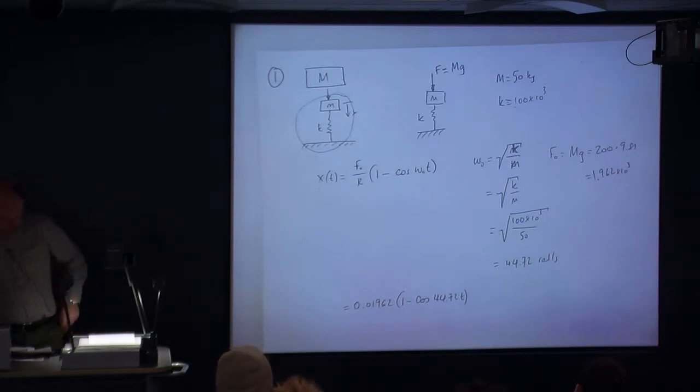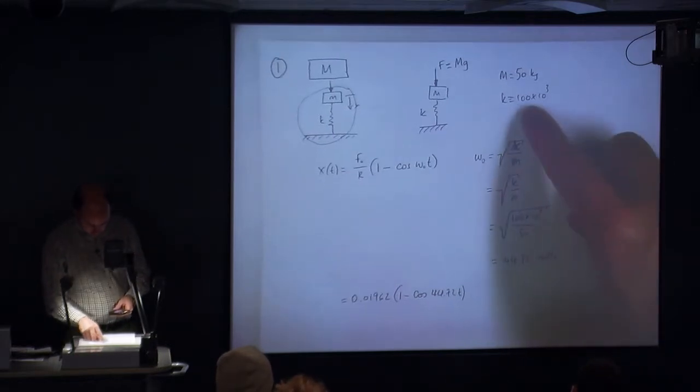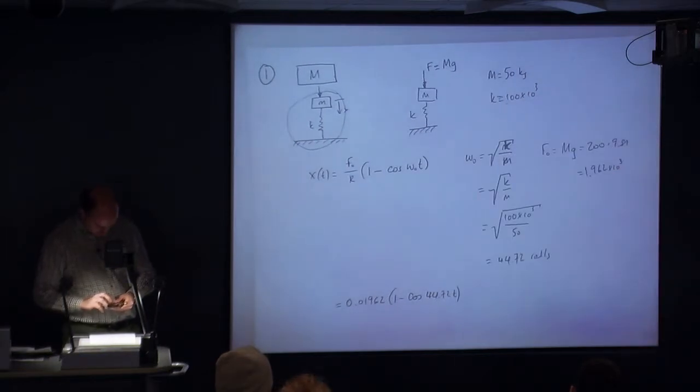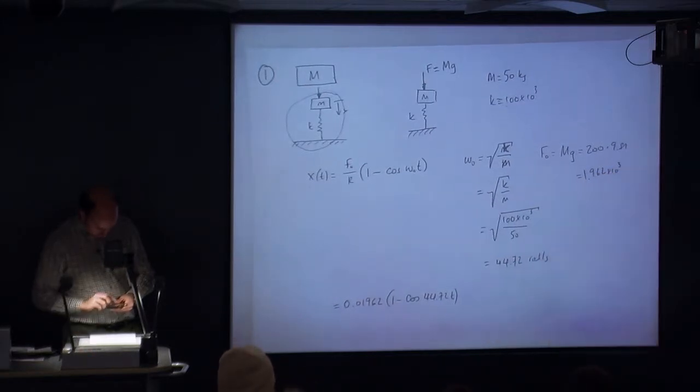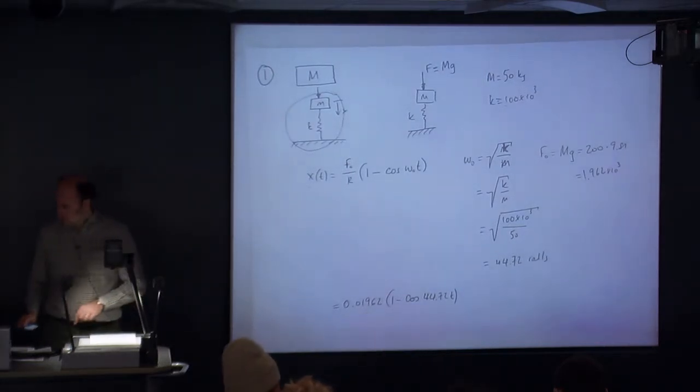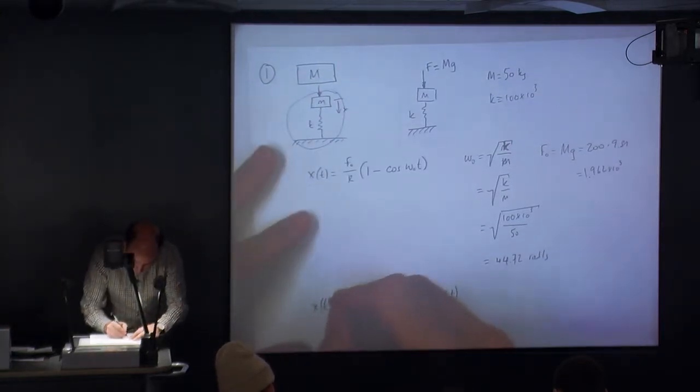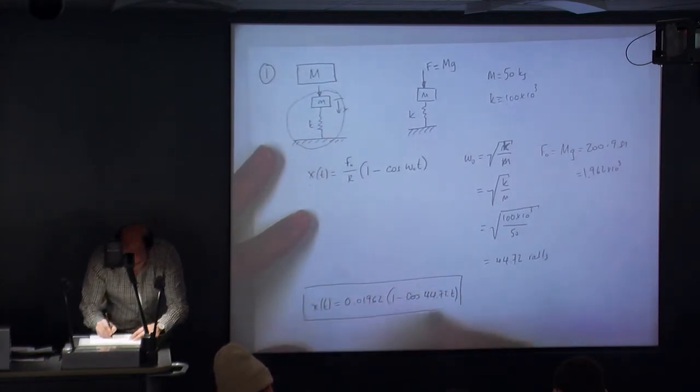Is that correct? I'm not sure about that first term there. We've got 2 times 10 to the 3 divided by 100 times 10 to the 3, essentially. That's correct. So that's our solution for x of t. That's part a.